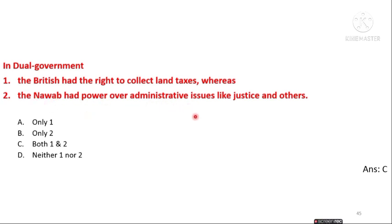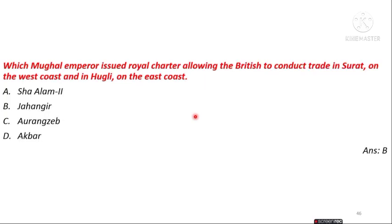The next question is: which Mughal Emperor issued a royal charter allowing the British to conduct trade in Surat on the west coast and in Hooghly on the east coast? The answer is option B — Jahangir issued the royal charter allowing this trade.